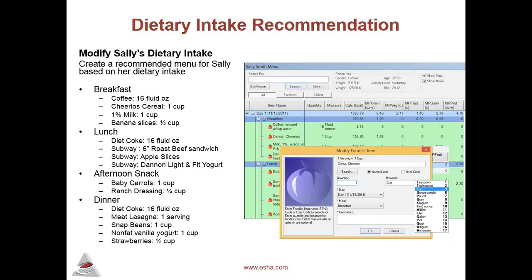A healthcare provider might provide Sally with a suggested menu to use at home by modifying her current diet to include their recommendations. Making these modifications is easy in Food Processor. Starting with Sally's diet, one might use the MyPlate food groups to help decide what food substitutions, additions, and/or deletions could be made in creating a suggested menu that better meets her calorie and nutrient goals. Sally is more likely to follow a menu that is more like her current diet. In the suggested menu seen here, we have made these changes: for breakfast, we've added a fruit and selected a lower calorie cereal and milk; for lunch, we've also added a fruit and selected a lower calorie sandwich and beverage; we've added a vegetable for an afternoon snack and selected a lower calorie beverage and dessert for dinner.